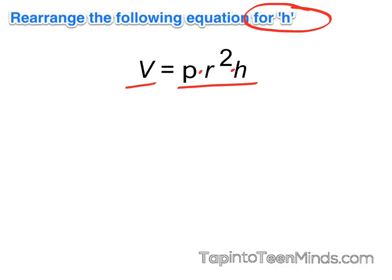And since we want to eliminate both p and r squared, we're going to be dividing out p and r squared. Whatever we do to one side, we do to the other.